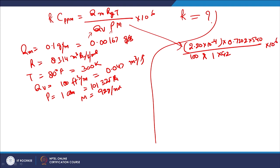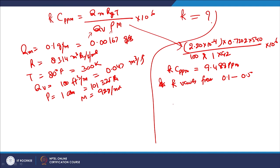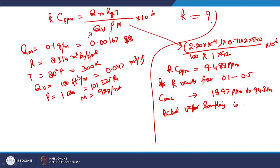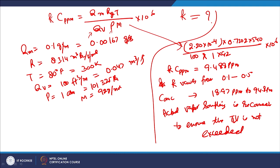Since K varies from 0.1 to 0.5, the concentration is expected to vary from 18.97 ppm to 94.8 ppm. Because the upper range approaches the TLV of 50 ppm, actual vapour sampling is always recommended to ensure the TLV is not exceeded.